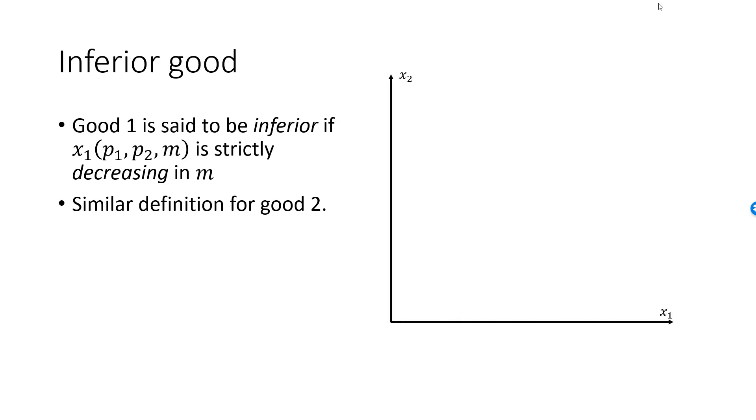Here is a picture illustrating preferences and optimal bundles when good 1 is inferior. We start with an income, the budget line, and an optimal bundle. Income is increased and the budget line is shifted outwards. I have drawn an indifference curve which is tangent to the new budget line. We see that consumption of good 1 has decreased while consumption of good 2 has increased.